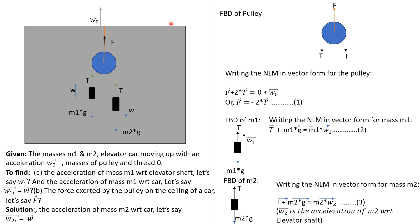Since this pulley is directly attached to the ceiling, it will be moving up with acceleration W0. So we have written: F plus 2T equals mass of the pulley, which is zero, times W0. Therefore F equals minus 2T. This is equation number 1.